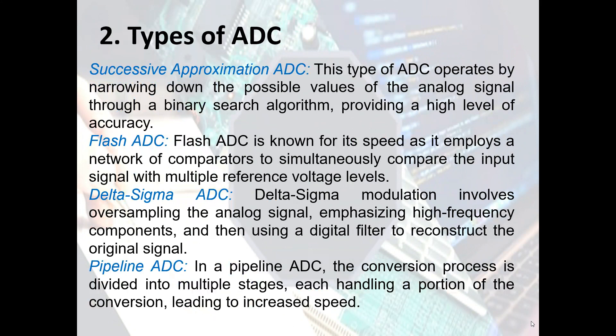We have several types of ADC. The successive approximation ADC operates by narrowing down the possible values of the analog signal through a binary search algorithm, providing a high level of accuracy. The flash ADC is known for its speed, as it employs a network of comparators to simultaneously compare the input signal with multiple reference voltage levels.